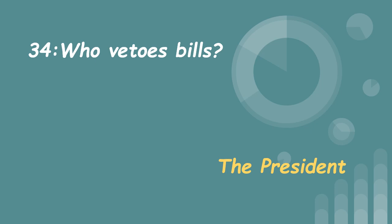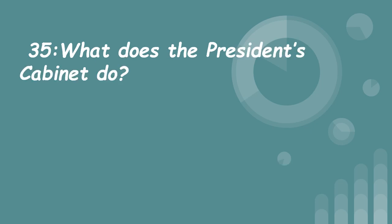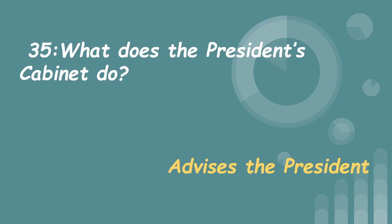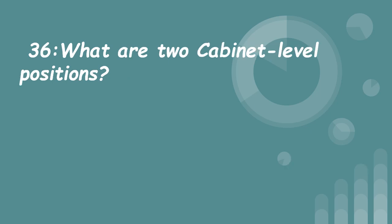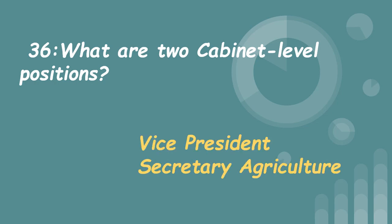35. What does the President's Cabinet do? Advises the President. 36. What are two Cabinet-level positions? Vice President, Secretary of Agriculture.